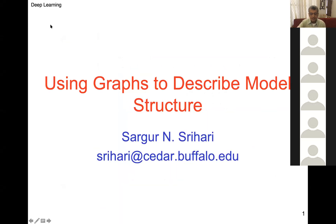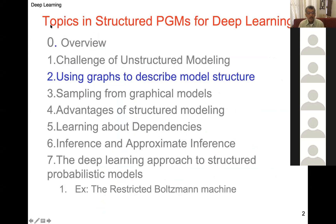The title is 'Using Graphs to Describe Model Structure.' Last time we did an overview and challenge of unstructured modeling. Today is about using graphs to describe model structure. On Wednesday we'll cover sampling from graphical models, advantages of structured models, learning about dependencies, inference and approximate inference, and the restricted Boltzmann machine.